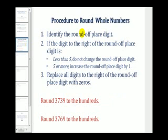The first thing we want to do is identify the round off digit. Then if the digit to the right of the round off digit is less than five, we do not change the round off place digit. If it's five or more, we increase the round off place digit by one. And the last step is to replace all digits to the right of the round off place digit with zeros.